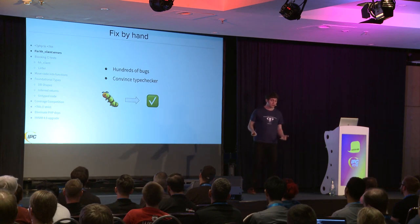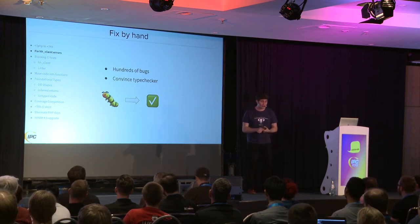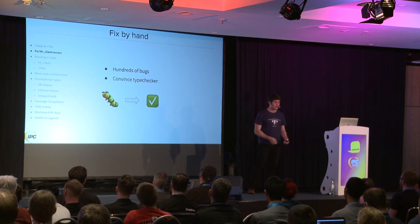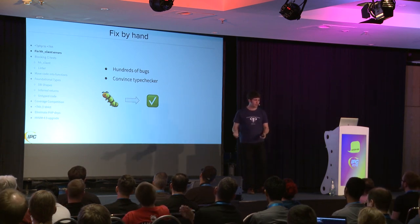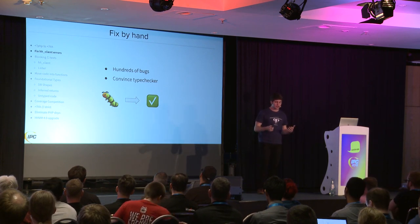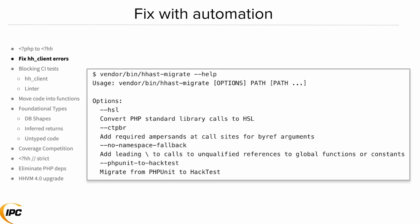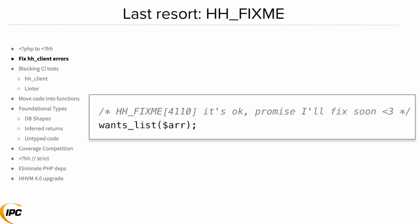We started fixing the bugs it told us about. There are kind of two main categories: actual bugs — an incredible number of bugs it discovered — and cases where the type information available makes the type checker think there might be a problem, but in practice there won't be. We divided these into two categories and fixed the fixable ones by hand. There's also automated tooling that enables the migration — for some differences between Hack and PHP, the tooling will just transform the code to conform, like adding a leading slash for root namespace function calls. And in the worst case, we can just tell Hack to suppress the error by putting a comment above the offending line saying 'I want to fix this later.'